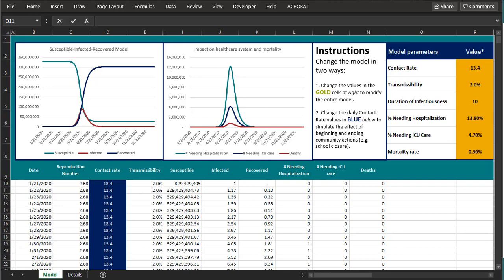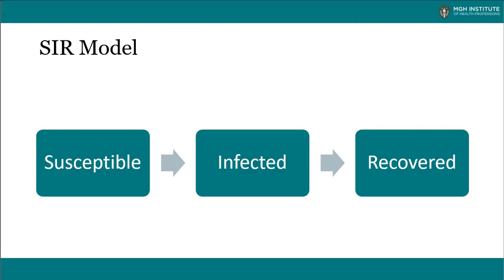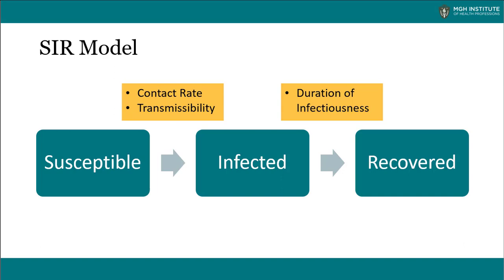That tool is an epidemiologic compartment model called a susceptible-infected-recovered model, set up in Excel. In a compartment model, the entire population is thought to be in compartments: susceptible, infected, or recovered.